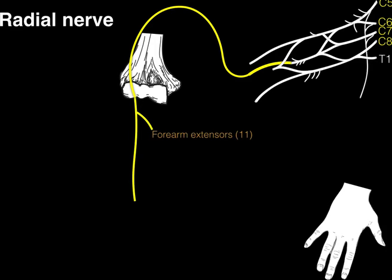In the posterior forearm, the radial nerve innervates all 11 forearm extensors. When the radial nerve enters the posterior forearm, it innervates all those forearm extensors. It also gives rise to cutaneous branches distributed to the posterior and radial part of the hand and a little bit of the digits — essentially the radial side of the posterior region of the hand. And that covers the median, ulnar, and radial nerves of the forearm and hand.